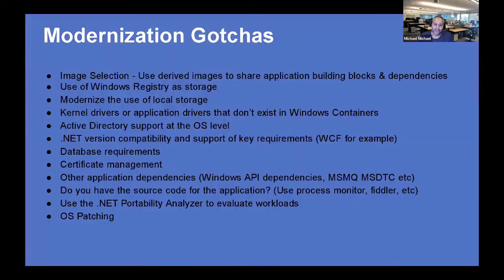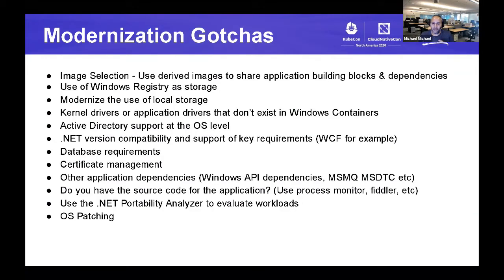Start slow, lift and shift some applications, gain knowledge about modernization, and then apply that blueprint to more applications — because many applications at organizations look very similar. As you go through that process, you'll identify gotchas. The first one is image selection: use derived images to share application building blocks and dependencies. You don't need to figure out how to put IIS into a base Windows Server image — start with the IIS derived image. Same for Python and other languages.